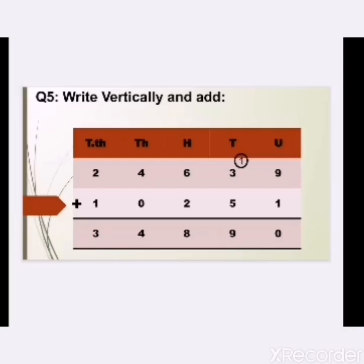Next, move to the hundreds column: 6 plus 2 equals 8. Move to the thousands column: 4 plus 0 equals 4. The concept here is that whenever we add any number with 0, the answer stays the same, so 4 plus 0 is 4. Next column is ten thousands: 2 plus 1 equals 3. So students, we have solved part A of question number 5. You can solve the rest of the parts by yourself.